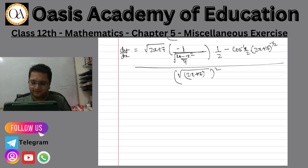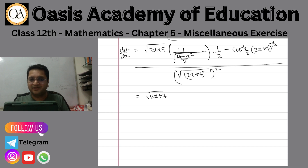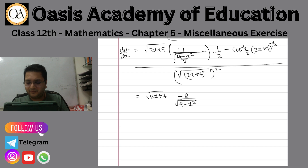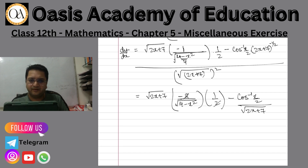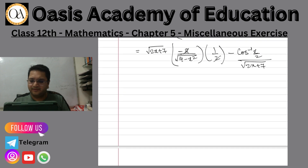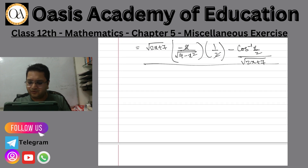Ultimately in simplification: under root 2x plus 7 first, then 2x plus 7 in the numerator. Here 4 will give minus 2, here 2 will give 4 minus x square, and then 1 by 2 and 2 will cancel. Ultimately here will be plus cos inverse x by 2 divided by under root 2x plus 7, and in the denominator we will have 2x plus 7. So ultimately dy by dx gives under root 2x plus 7.